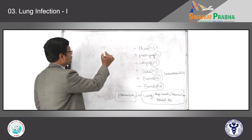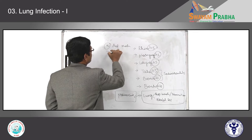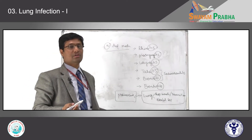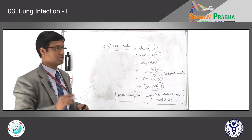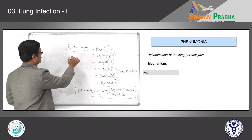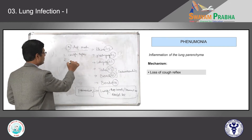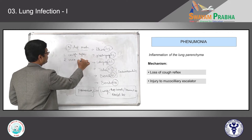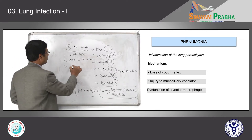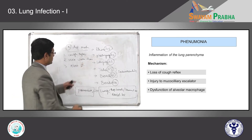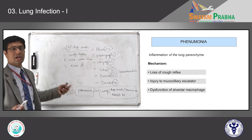In the previous class, I mentioned the normal defense mechanisms which prevent infection of the lung parenchyma in healthy individuals. To repeat: one is the cough reflex, second is mucociliary clearance, and finally we have alveolar macrophages. Impairment of any of these normal mechanisms ultimately leads to infection.